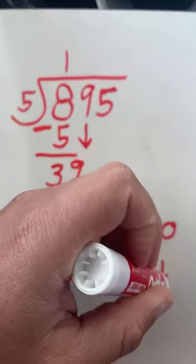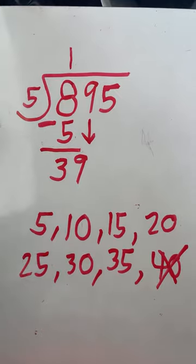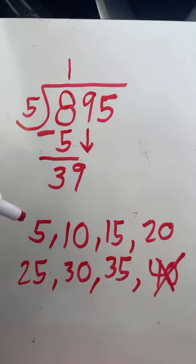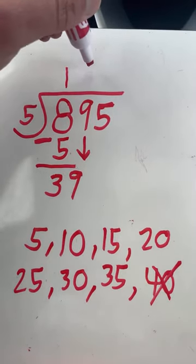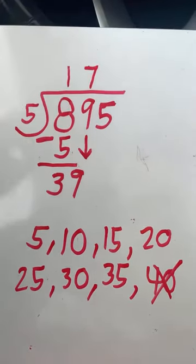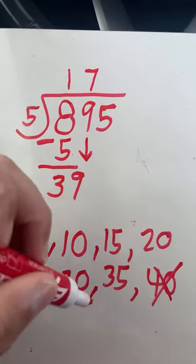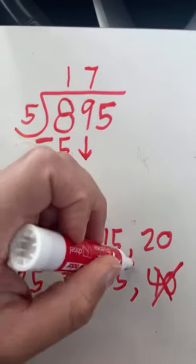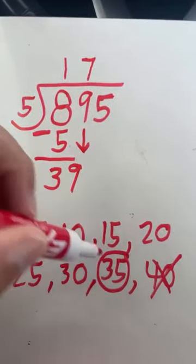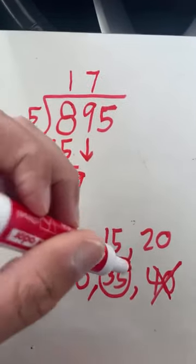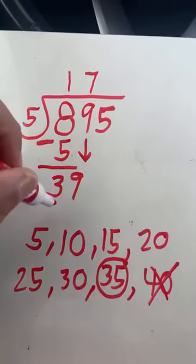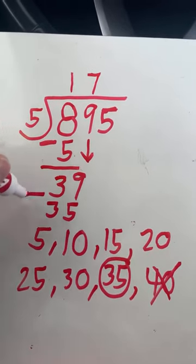40 is too far. 40 would be past 39. But we were able to get 1, 2, 3, 4, 5, 6, 7 groups of 5 within 39. And since 35 was as close as we could get to 39 without going over, 35 is what we subtract to find our remainder.